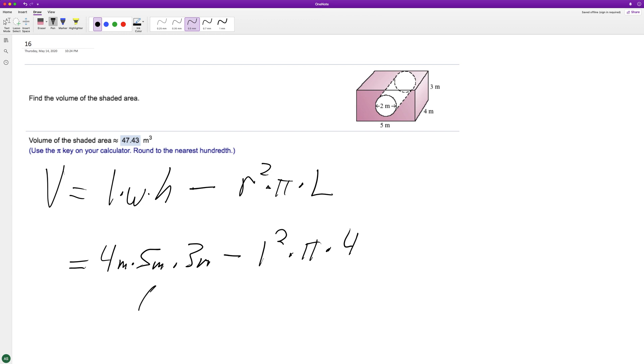And we're going to get 60 meters cubed minus, this is like 13, we'll just put 4π meters cubed. And what we get approximately is 47.4336.